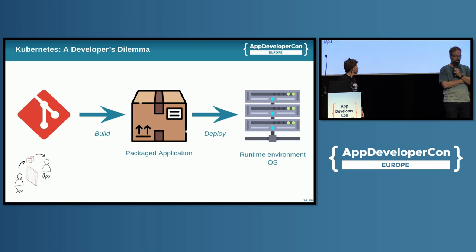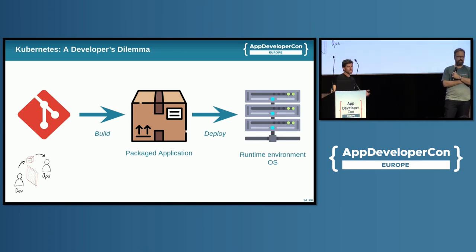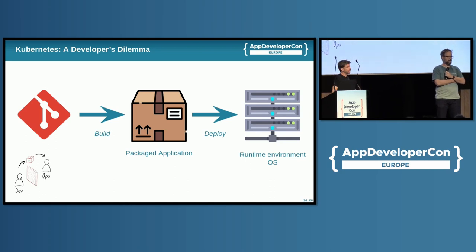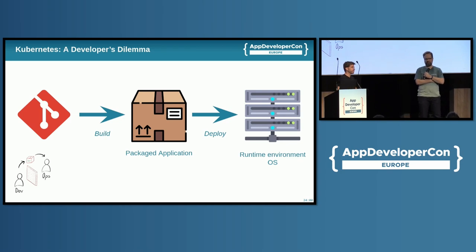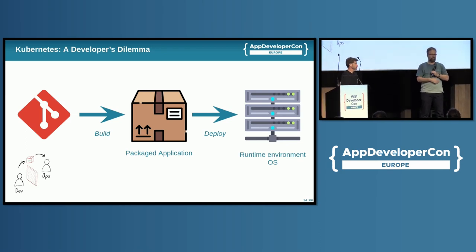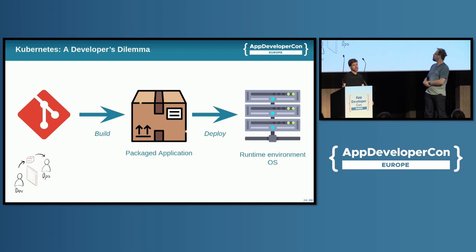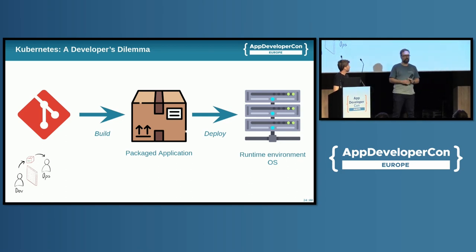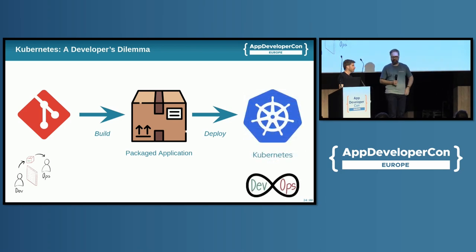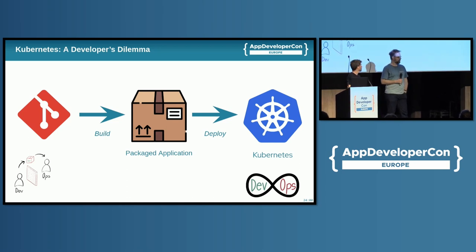As application developers, I'm pretty sure you're familiar with these diagrams. You start by coding your application, then you build it, you package it, and eventually you pass it on to an operations team that will be in charge of deploying this application and making it available for users — probably in a dedicated server with a compatible OS and a suitable runtime environment. However, with the appearance of Kubernetes and the popularization of the DevOps culture, many of these responsibilities have shifted to the left.